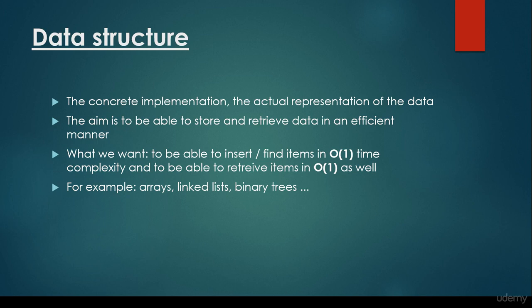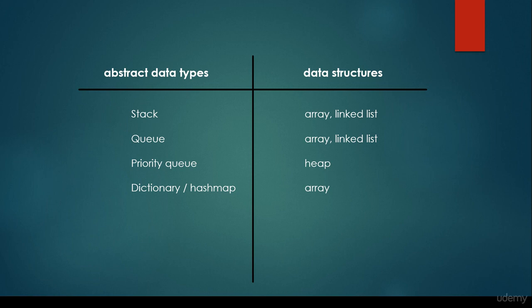So for example, arrays, linked lists, and binary trees are data structures — we have the concrete implementations. So we have the abstract data type, just the model, just the supertype, just the specification, and the data structures as the concrete implementations. We have the stack abstract data type, and we can implement a stack with the help of array or linked list data structures. We have the queue abstract data type, and we could implement a queue with the help of array and linked list. We have the priority queue as an abstract data type, and the heap is the concrete implementation of the priority queue.